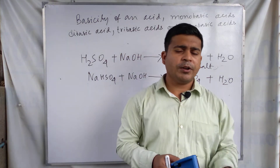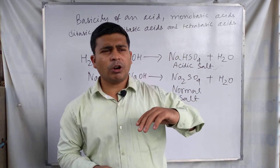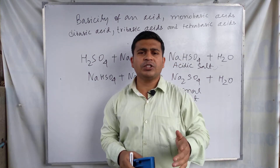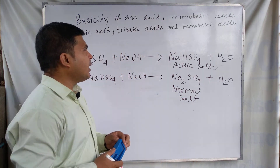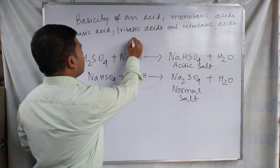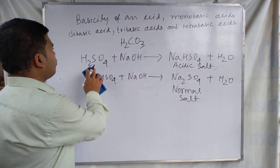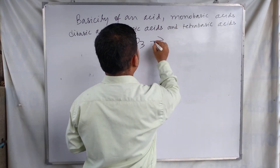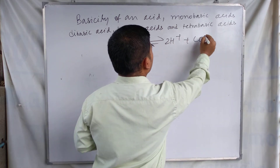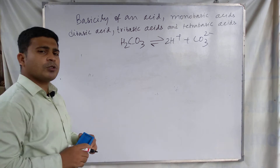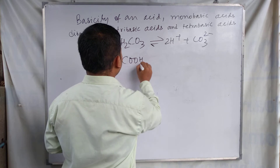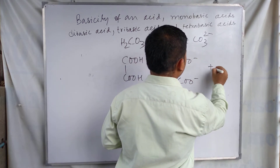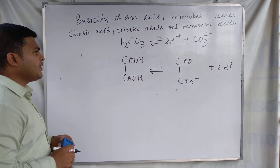Dibasic acids are acids that have two ionizable hydrogen atoms in the molecule, or acids that can give two H⁺ ions in aqueous solution. Other examples of dibasic acids include H₂CO₃ (carbonic acid), which is a weak acid that ionizes in equilibrium to produce two H⁺ and CO₃²⁻. Oxalic acid is also a dibasic acid, producing two H⁺ and COO⁻ ions.